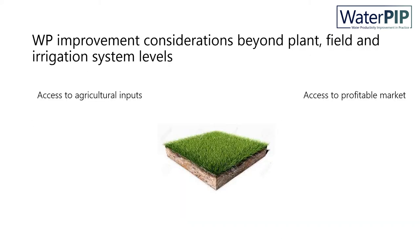There are also considerations for water productivity improvements beyond the crop, field and irrigation system levels. These include access to agricultural inputs and access to profitable markets, with proper policy and support in place to facilitate such access. However, one needs to be aware of adverse effects such as the rebound effect, which can cause transgression of local social and environmental boundaries — for example, food crops may become unaffordable locally, or crop production may become unsustainable due to pollution or over-extraction.